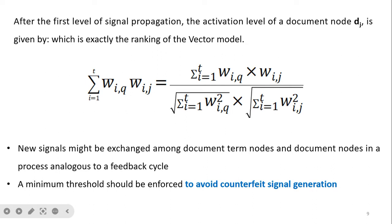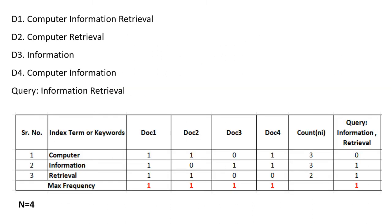New signals might be exchanged among document term nodes and documents in a process analogous to a feedback cycle. A minimum threshold should be enforced to prevent counterfeit signal generation. Now let us see the example: four documents are given — computer information retrieval, computer retrieval information, computer information — and the query is information retrieval.